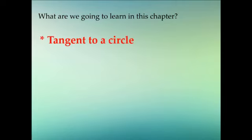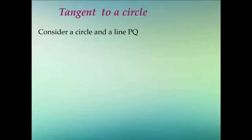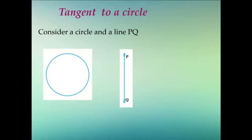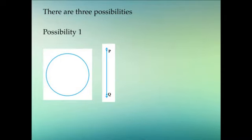In this chapter, we are going to learn about a tangent to a circle and the number of tangents from a point on a circle. We need to understand what a tangent is and how many tangents are possible in a circle. Let's consider a circle and a line PQ. When we combine these two, there are three possibilities. One is that the line PQ lies entirely outside the circle, with no intersection between the two figures.